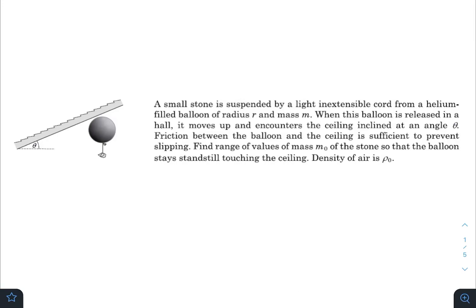Hey what is up everyone, I hope all of you are doing great. In today's question, a small stone is suspended by a light inextensible chord from a helium filled balloon of radius r and mass m. When this balloon is released in a hall, it moves up and encounters the ceiling inclined at an angle theta. Friction between the balloon and the ceiling is sufficient to prevent slipping. Find range of values of m0 of the stone so that the balloon stays standstill touching the ceiling. Density of air is rho naught.